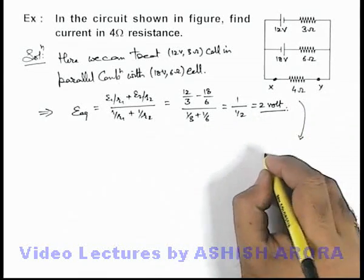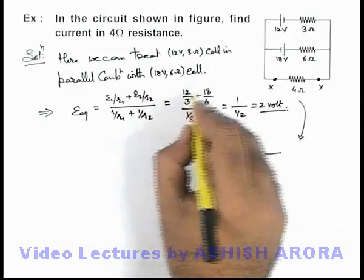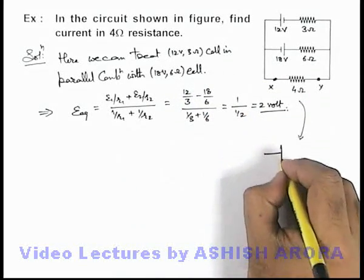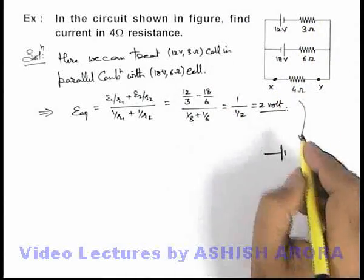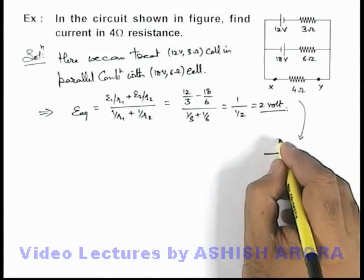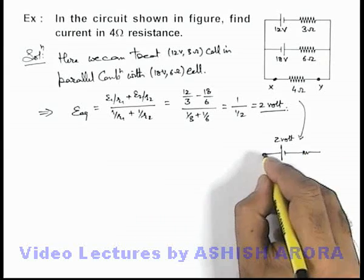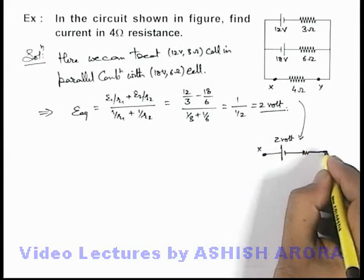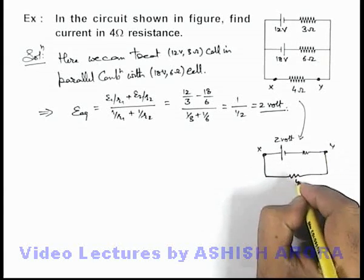So this can be redrawn as: here you can see we have taken this 12 volt positive and the result is positive, that means the high potential end of this equivalent battery will be connected to x. So this will be 2 volt, and there will be an internal resistance connected to terminal y, and there is a 4 ohm resistance which is connected over here.